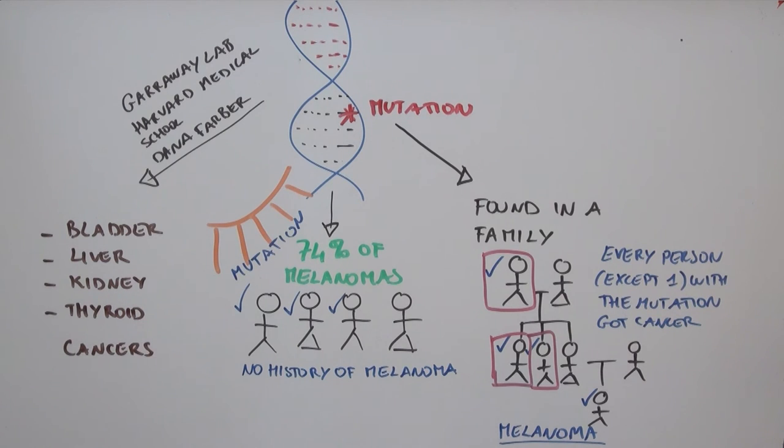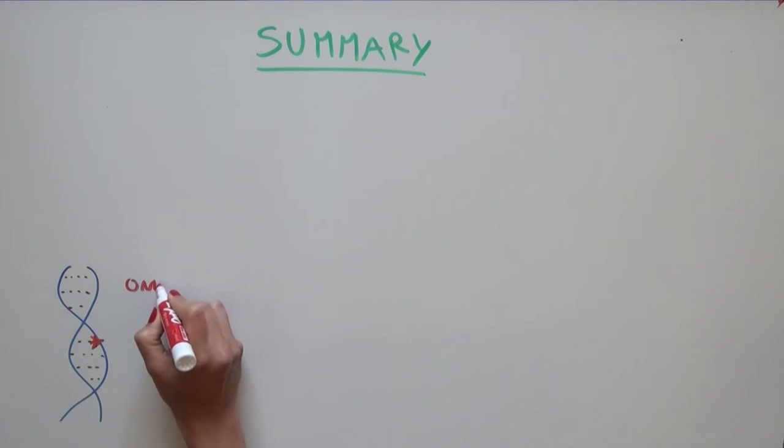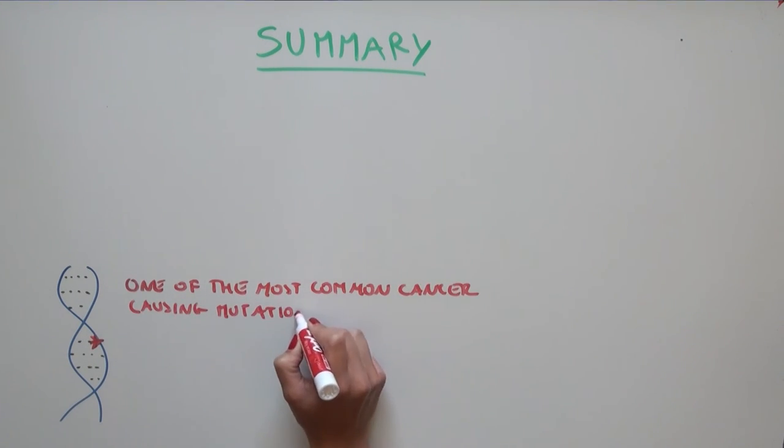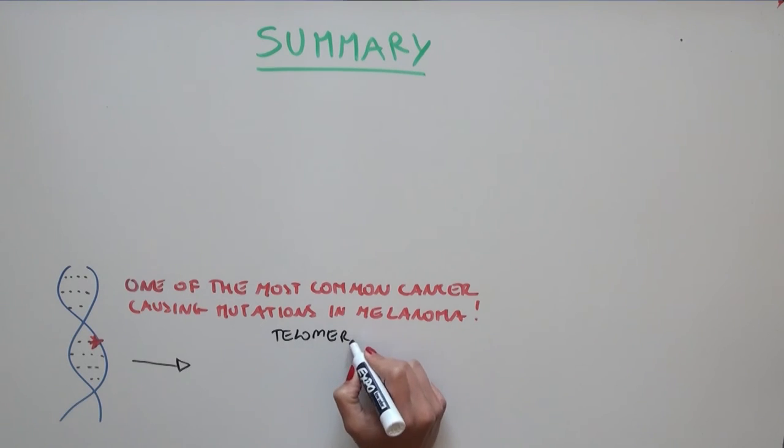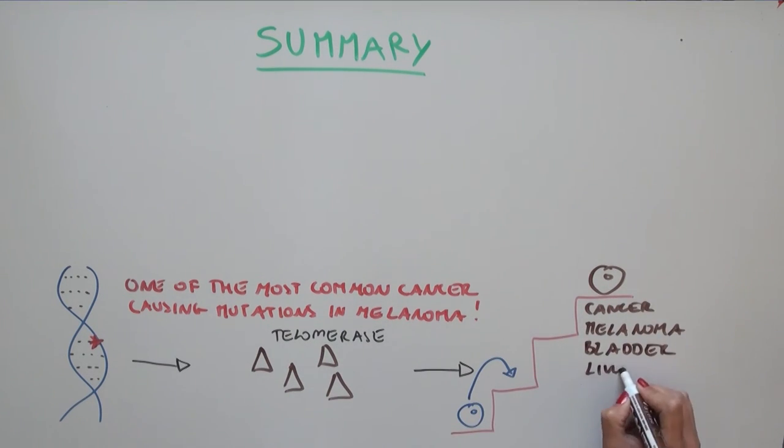So what did this study show? These scientists identified one of the most common cancer-causing mutations in melanoma, a mutation that increases telomerase and drives cancer development of all sorts of cancers. Although it still remains to be seen exactly how telomerase drives cancer development.